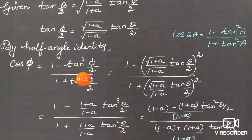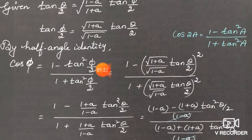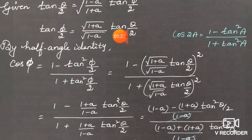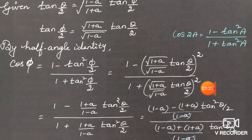Using the half-angle identity: cos φ = (1 - tan²(φ/2)) / (1 + tan²(φ/2)). Now substitute tan(φ/2) = √((1+a)/(1-a)) · tan(θ/2) into the expression. So: cos φ = [1 - ((√(1+a)/√(1-a)) · tan(θ/2))²] / [1 + ((√(1+a)/√(1-a)) · tan(θ/2))²].